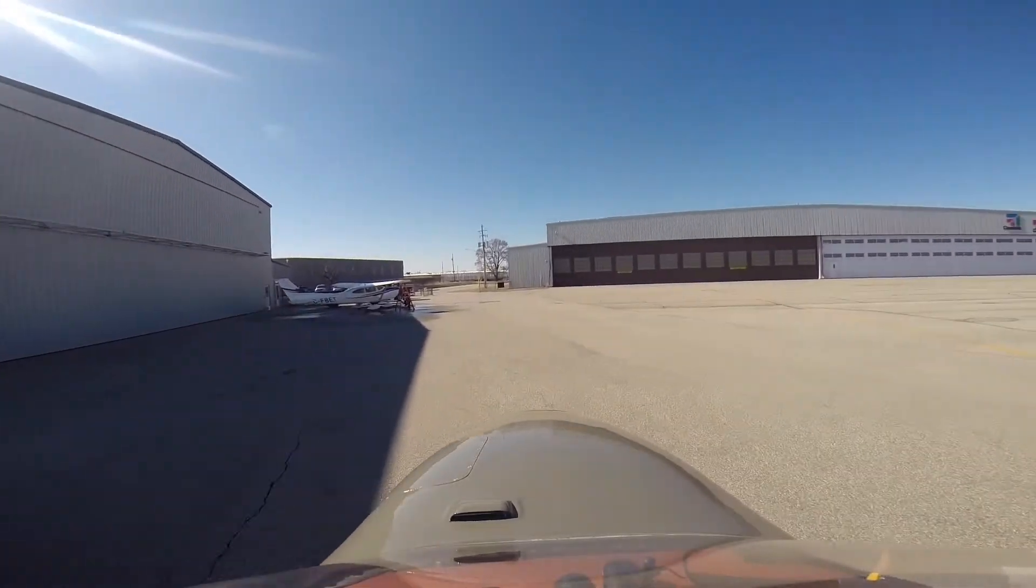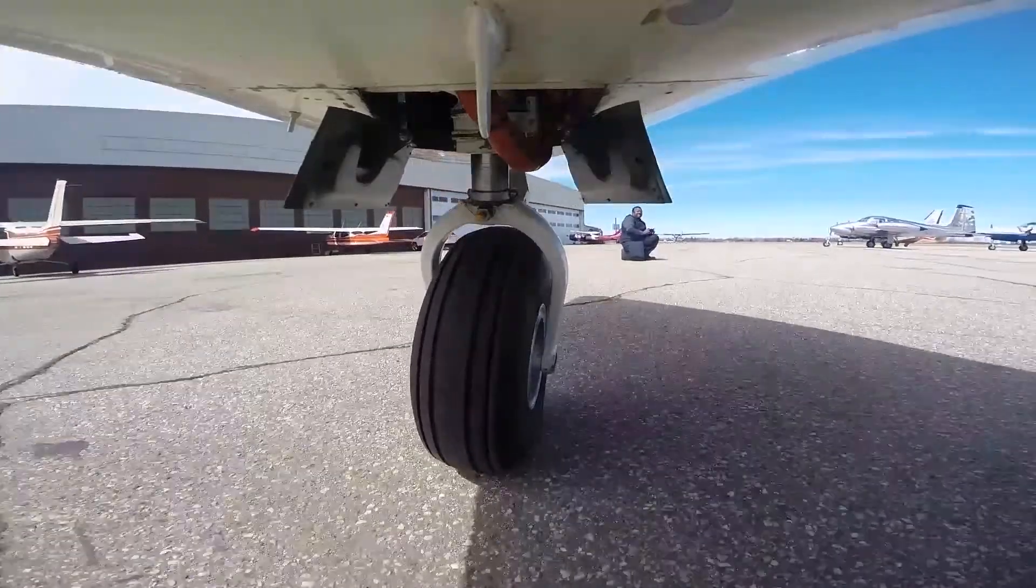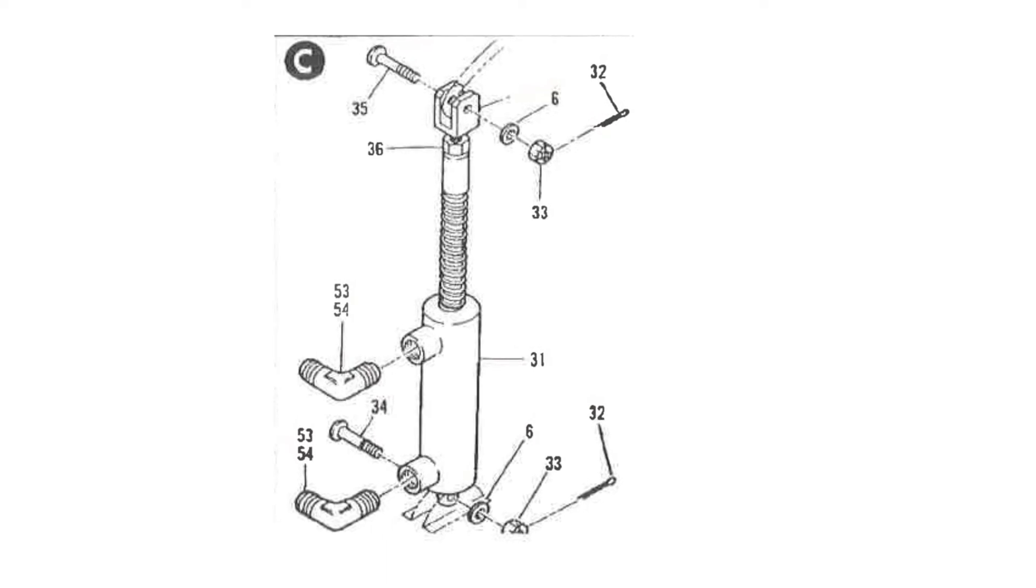Nobody pays much attention to the piston rod seal in the Aerostar master cylinder until it leaks. Even when it does, it's not likely to cause much more than carpet damage unless you ignore it.